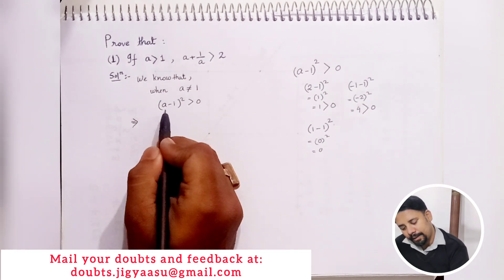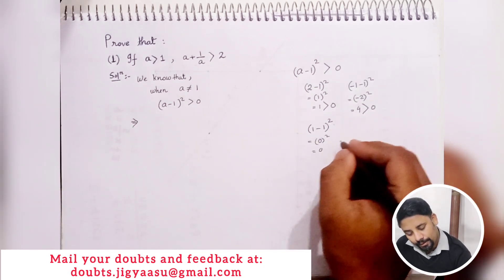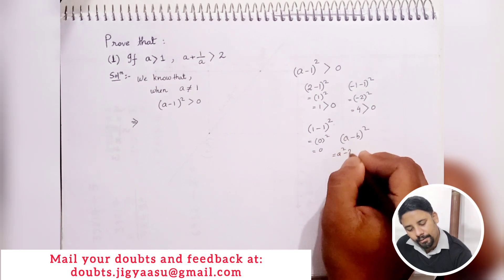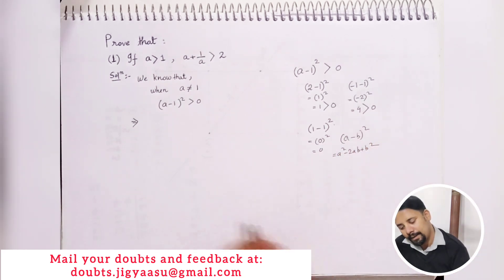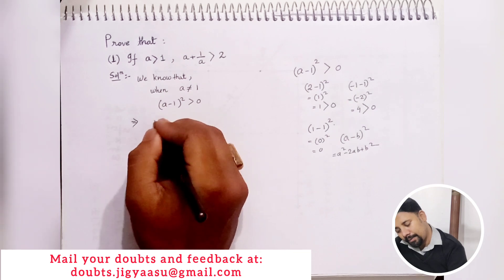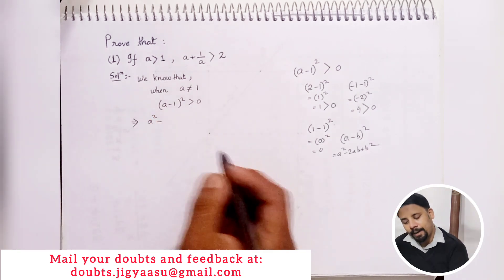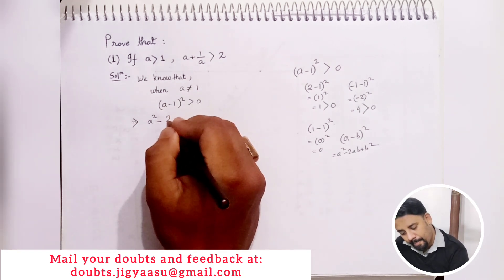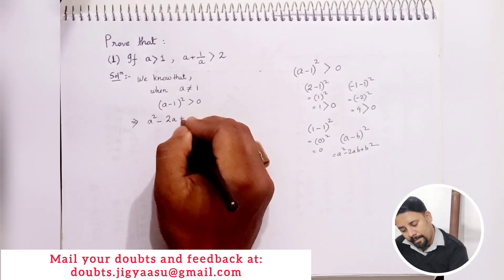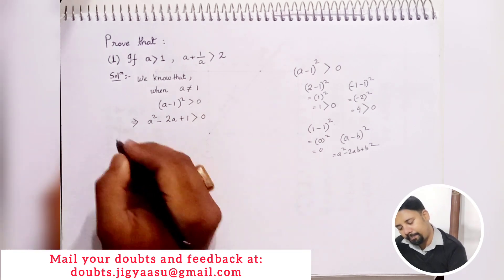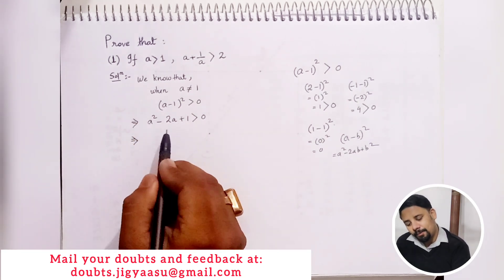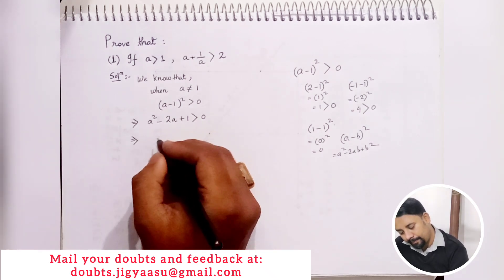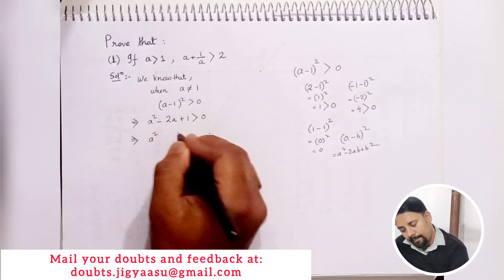We can expand (a minus 1)² using the identity (a minus b)² equals a² minus 2ab plus b². So we write a² minus 2 times a times 1 plus 1² which gives us a² minus 2a plus 1 is greater than 0. Transposing minus 2a to the right-hand side, we get a² plus 1 is greater than 2a.